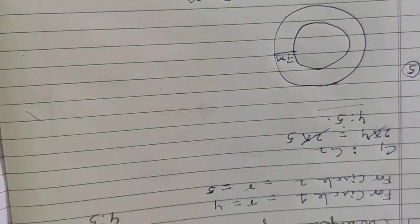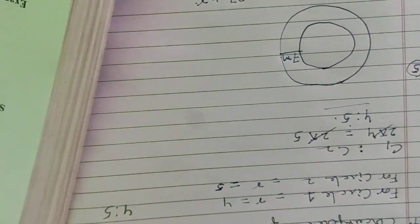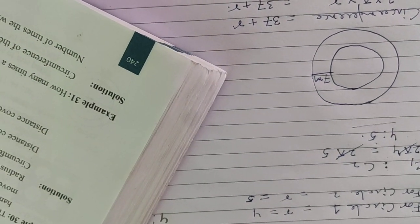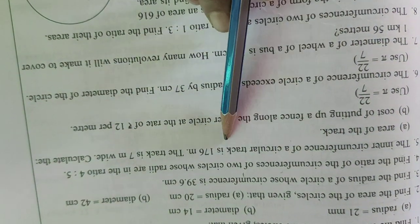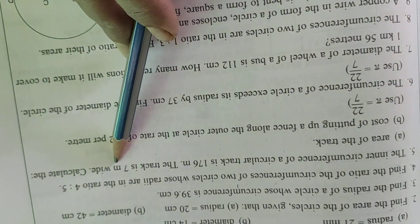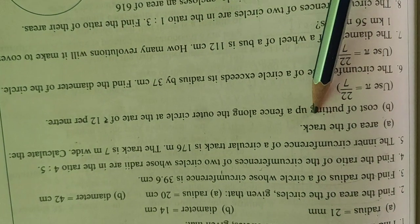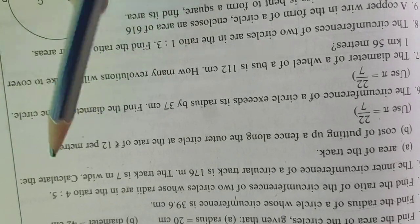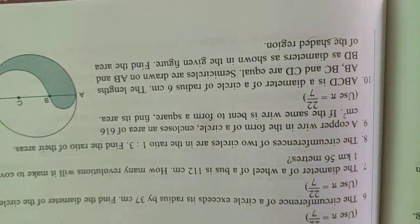Now let's come to question number 5. The inner circumference of a circular track is 176 centimeters and the track is 5 meters wide. Calculate the area of the track and the cost of putting a fence along the outer circle at the rate of 12 rupees per meter. I'm just explaining the sum — the solve you have to do yourself.